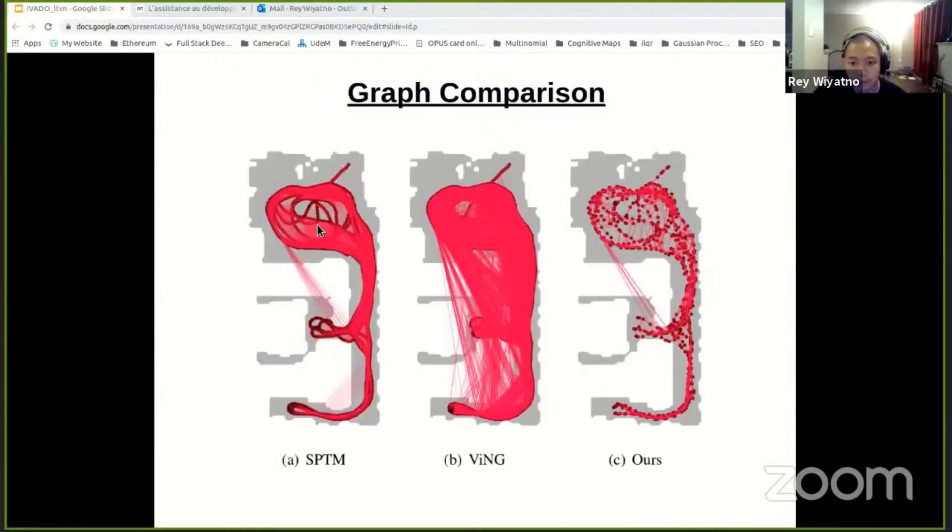And we can also qualitatively see that our graph have the fewest number of nodes compared to the others while still maintaining proper map coverage. And we also can see that our graph have fewest false positive edges through walls.